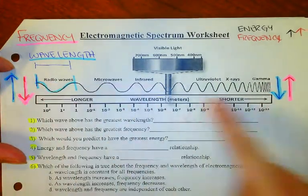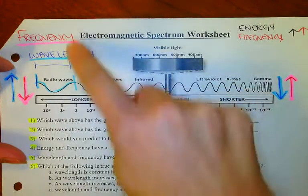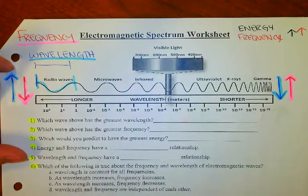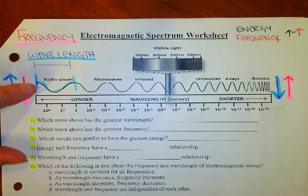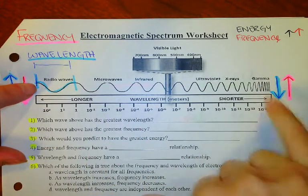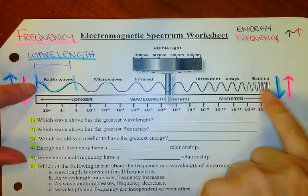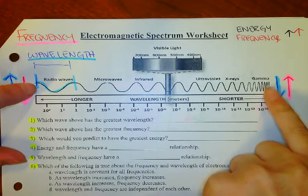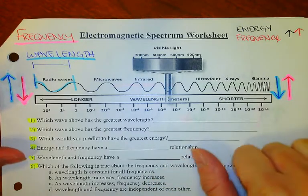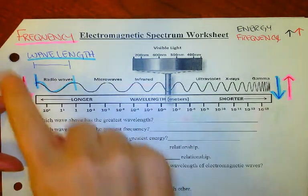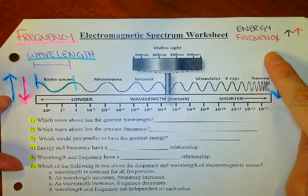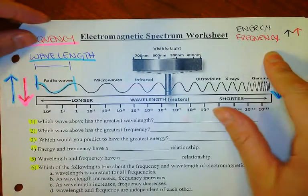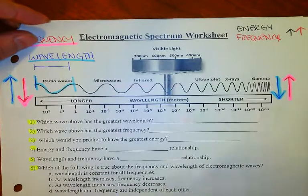So it goes from high wavelengths down to low wavelengths. And frequency is how often it happens. If all of these are moving at the speed of light, something like this is going by much more often. It's going to hit you more often. So frequency and wavelengths have to be opposite of each other. So as wavelength gets smaller, frequency gets bigger.